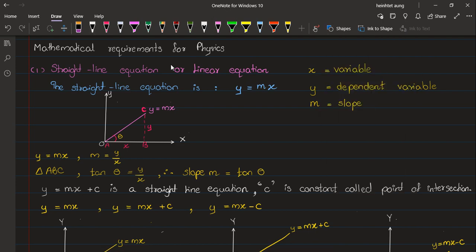Here we have the variables: x is the independent variable, y is the dependent variable, and m is the slope. We have the straight line equation with the graph showing y equals mx, where m is the slope and c is called the point of intercept.